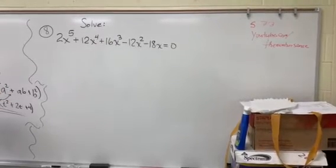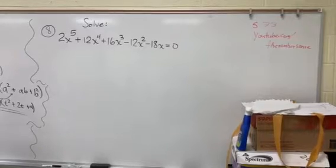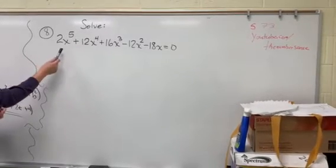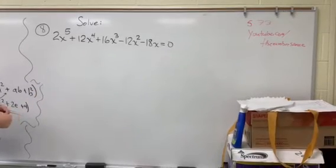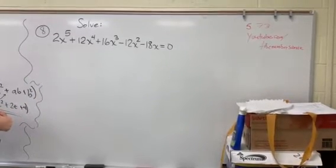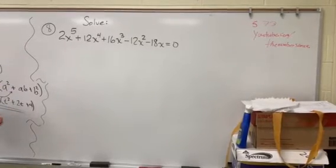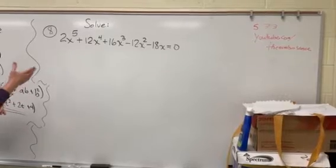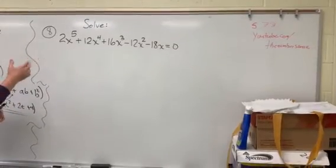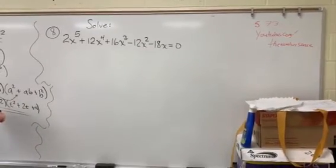Okay, this is a homework problem that we've had several questions on, and we're asked to solve a fifth degree polynomial: 2x to the fifth plus 12x to the fourth plus 16x cubed minus 12x squared minus 18x equal to zero. Some students want to learn how to solve this without using a graphing calculator because this could be graphed and you could find all the zeros just by looking at the graph. But how could you do this without a calculator?